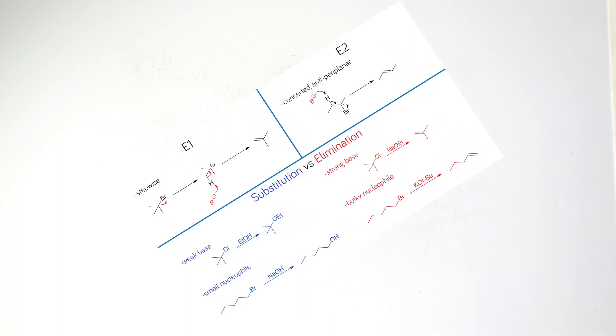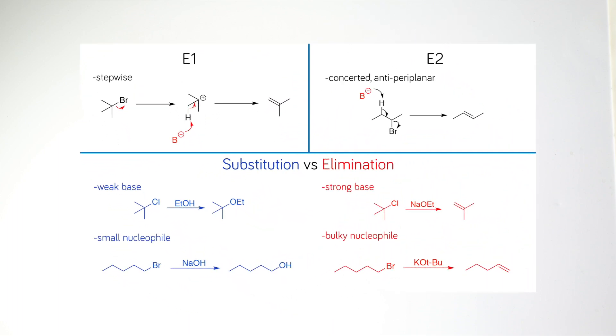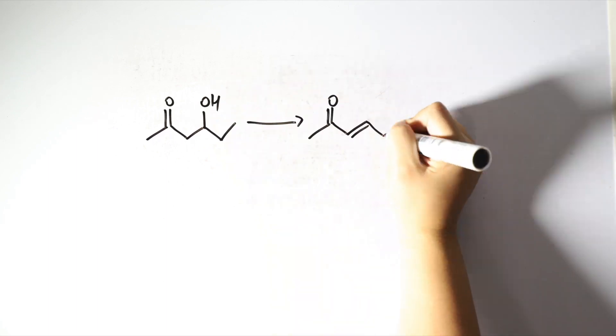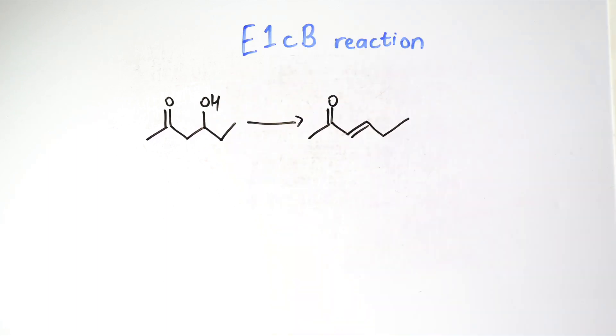In the previous video we talked about E1 and E2 elimination reactions. Now we are going to talk about the other elimination reaction: E1CB reaction. In this E1CB reaction, a bad leaving group can leave the molecule, like a hydroxyl group.